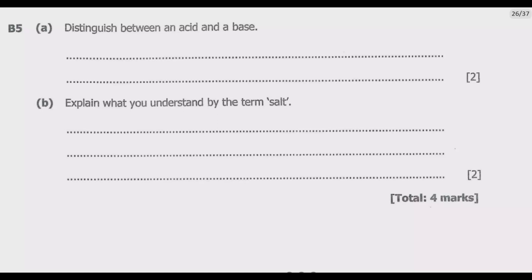So let us look at Question B5: Distinguish between an acid and a base. In this case we are differentiating or comparing the two. What is key is knowing that an acid is a compound that donates hydrogen ions while a base is a compound that accepts hydrogen ions. In a distinction between these two, you need to focus on these aspects.